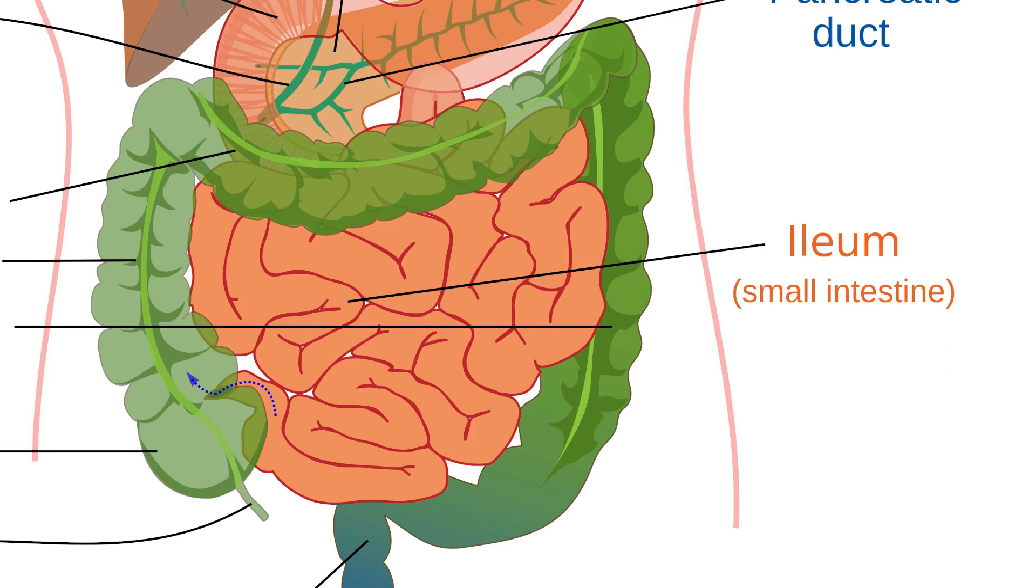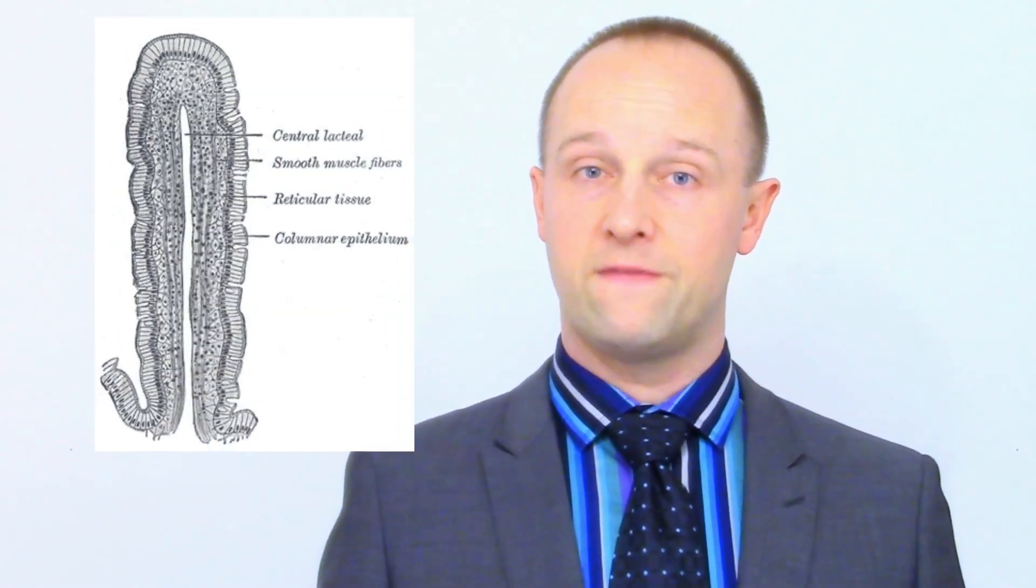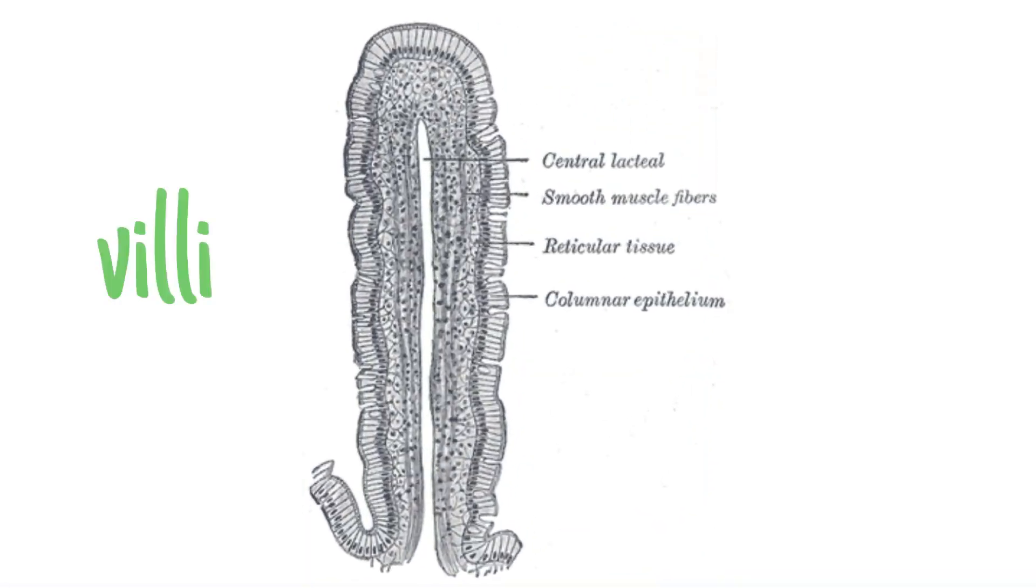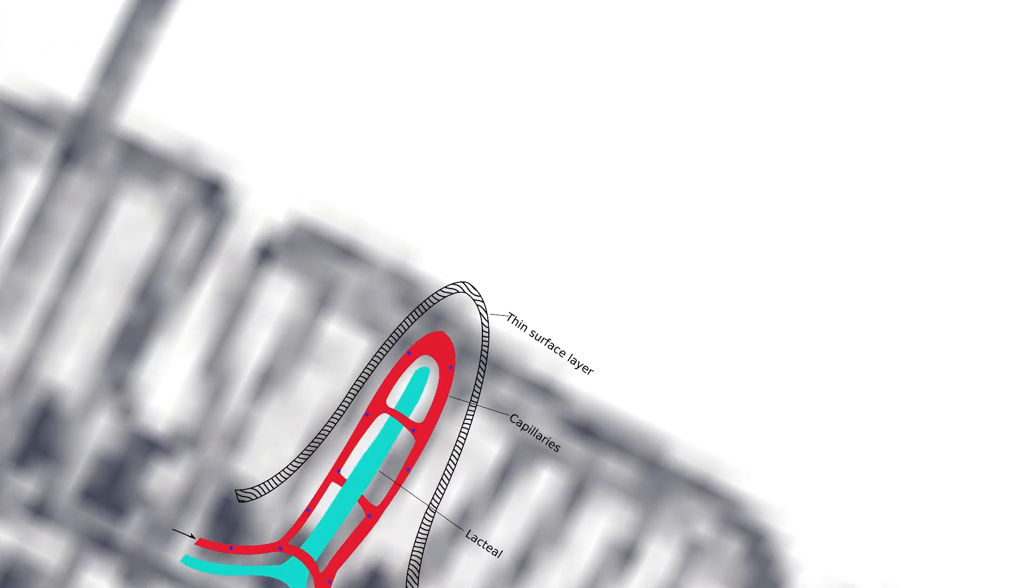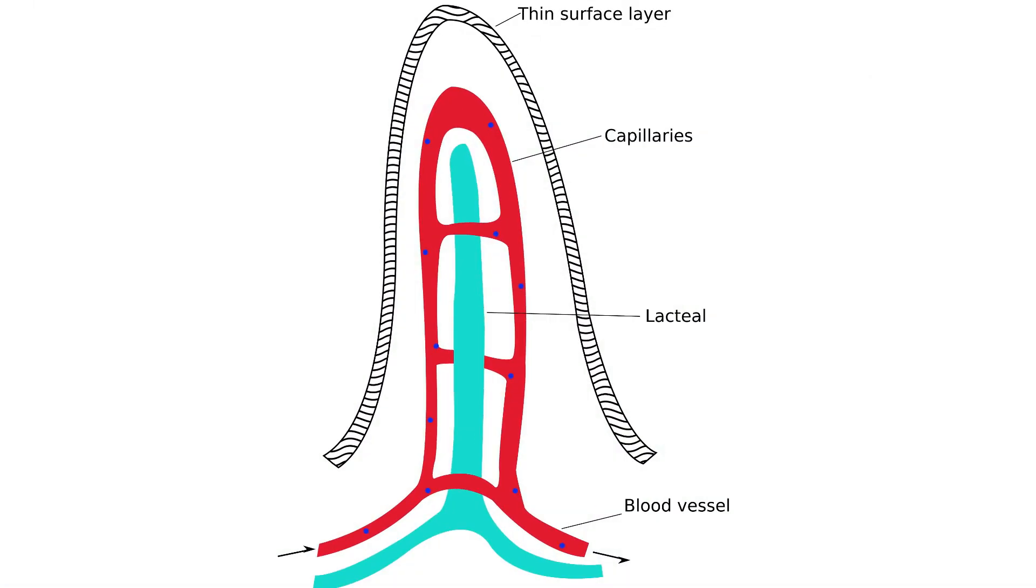Peristalsis again moves the mix of semi-digested food and digestive juices along the ileum, with the digestive juices continuing to break down the food until it's in the form of single, small molecules ready to be absorbed by the body. The inner surface of the ileum is covered with long, finger-like projections called villi - the singular noun is villus. These, in turn, are covered in microvilli. This gives the ileum a huge surface area in a very small volume, increasing the rate at which absorption of nutrients can happen.